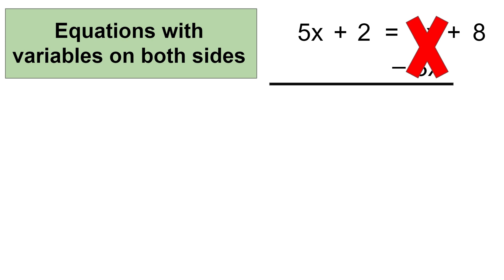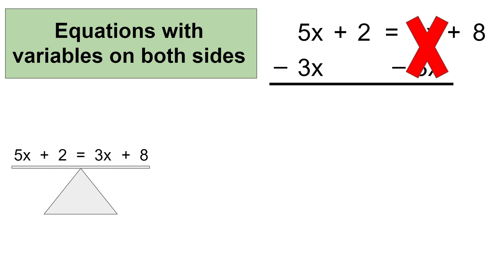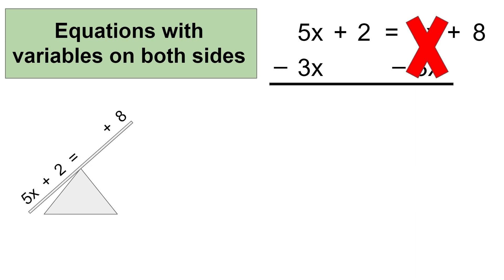Both sides of the equal sign need to always remain equal, which means whatever you do on one side of the equal sign, you need to do the same on the other side to keep it equal, just as you would with a balanced scale. If the scale is balanced, the amount of weight that you add or remove on one side of the scale will cause imbalance. This means you'll need to add or remove the same amount on the other side of the scale to keep it balanced.